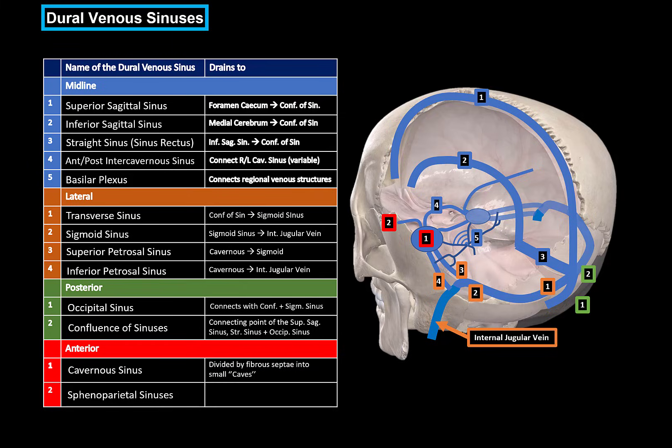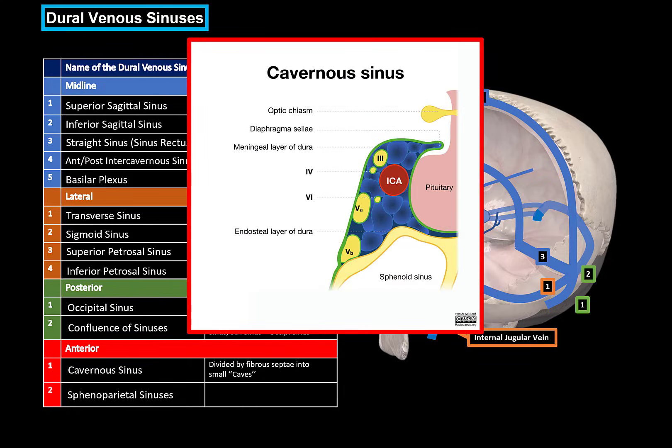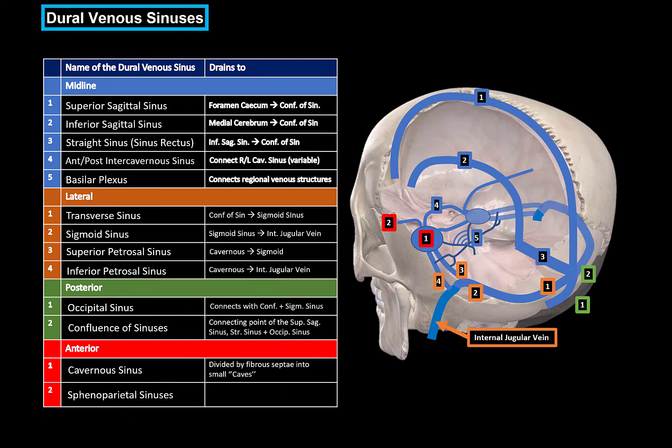The cavernous sinus is divided by fiber septae into small cave-like compartments — that's where the name 'cavernous' comes from. Different structures pass within the cavernous sinus. There's a mnemonic for all the structures that go through it: O TOM CAT S. O stands for the oculomotor nerve (cranial nerve III), T for the trochlear nerve (cranial nerve IV), O and M for the ophthalmic and maxillary branches of the trigeminal nerve, C for the internal carotid artery, A for the abducent nerve (cranial nerve VI), and T and S complete the mnemonic.